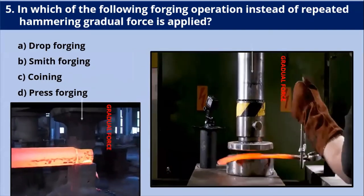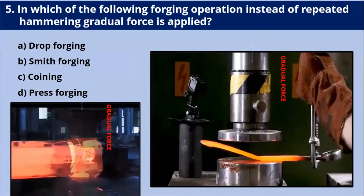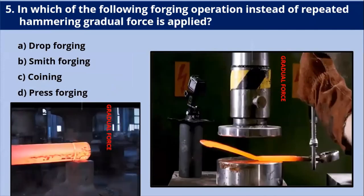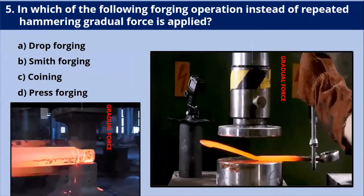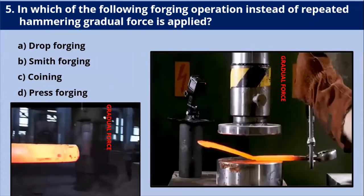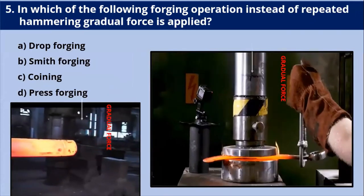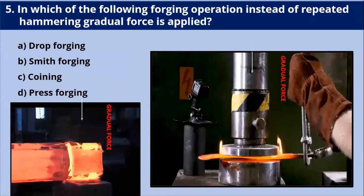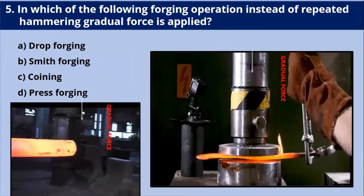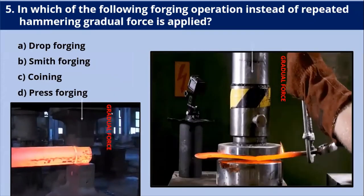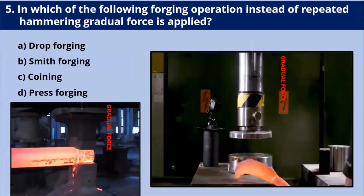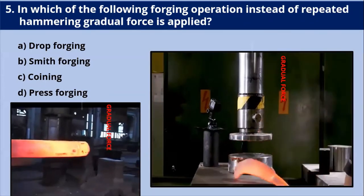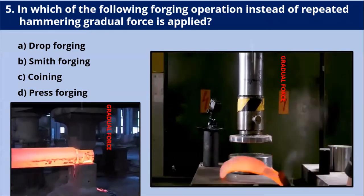In which forging operation, instead of repeated hammering, is gradual force applied? Press forging is the answer. In press forging, gradual force is applied on the work piece. The amount of time the dies are in contact with the work piece is measured in seconds.